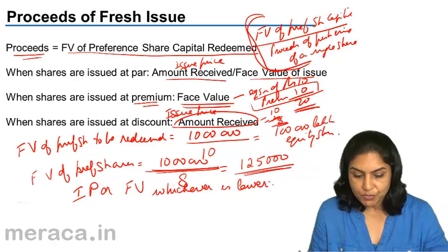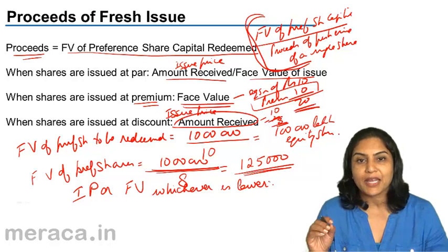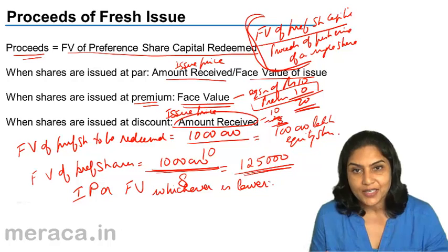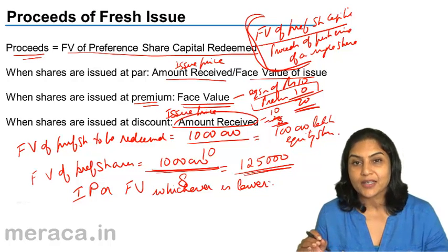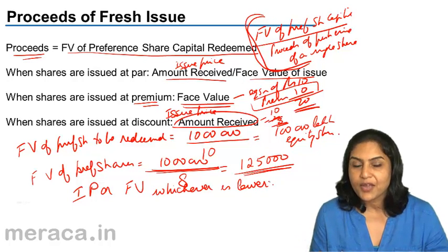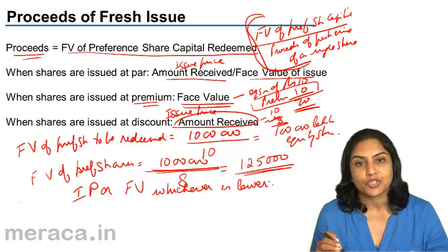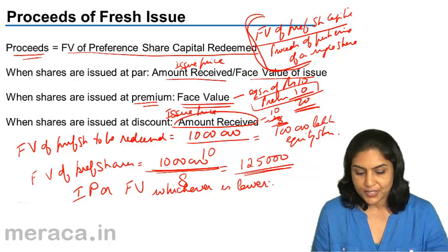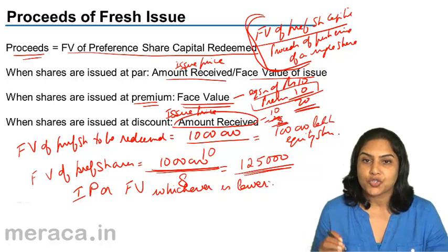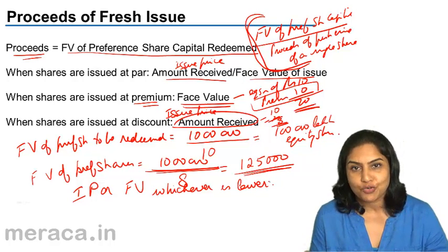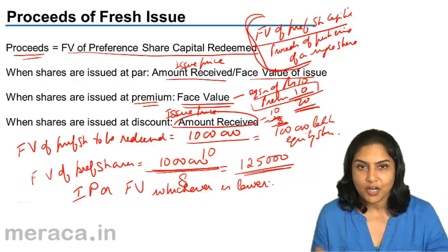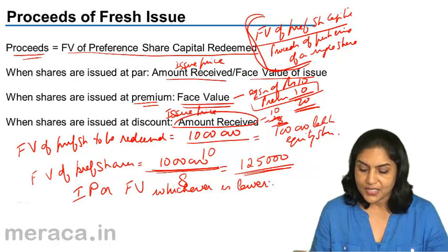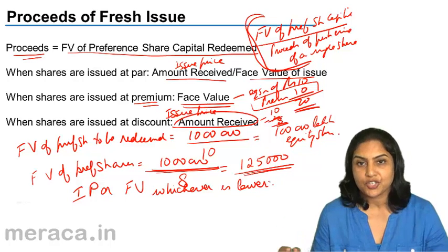To repeat the logic: when shares are issued at a premium, securities premium cannot be used for redemption of preference shares, and therefore we consider only the face value. When new shares are issued at a discount, the amount received is lower; we are conservative and consider the actual amount received so that we can issue a greater number of shares, collect money, and redeem the preference shares. So, the proceeds of fresh issue is either the face value or the issue price, whichever is lower. If at par, it does not matter; if at premium, we take the face value; if at discount, we take the issue price. This is useful in order to find out the number of shares to be issued.